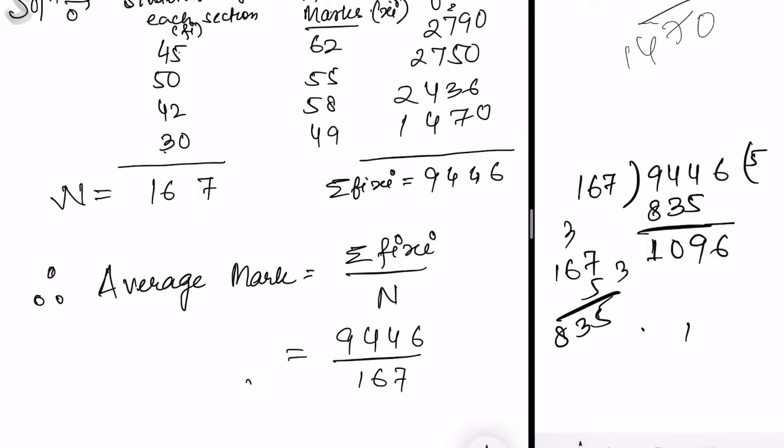167×6 is 1002. 1096 minus 1002 gives 94. Place the decimal point, you get 0.94. Bring down 0, making 940. 167 into 940 goes 5 times. Subtract to get 105. Again bring down 0, making 1050. 167 into 1050 goes 6 times. You get 56.56, and this is your average mark.